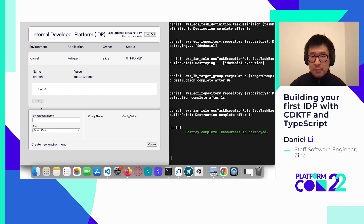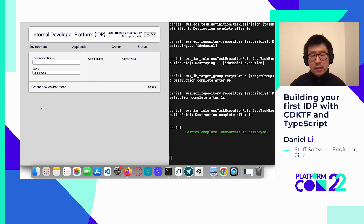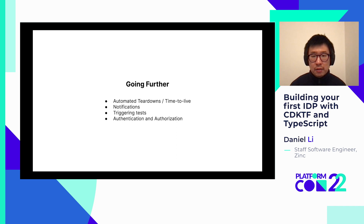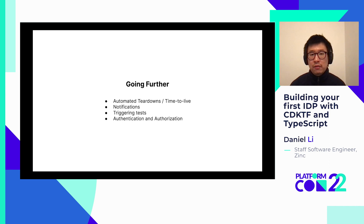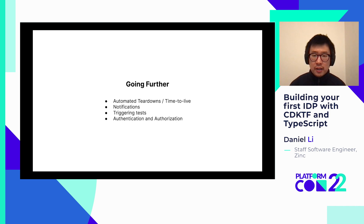What I showed you today is a very basic IDP. To make it more useful, you may consider implementing any of the following features. Automated teardown or time-to-live, where every environment has a default lifespan of a day or a week, which can be manually extended — this prevents abandoned or idle environments and helps reduce cost. Notifications, where the IDP sends a message to the developer when deployment is complete, and notifies the platform team when deployment fails. The IDP can also trigger tests when an environment is deployed to ensure it's deployed correctly. And authentication and authorization can prevent developers from modifying someone else's environment, and help attribute cost to each developer or team.